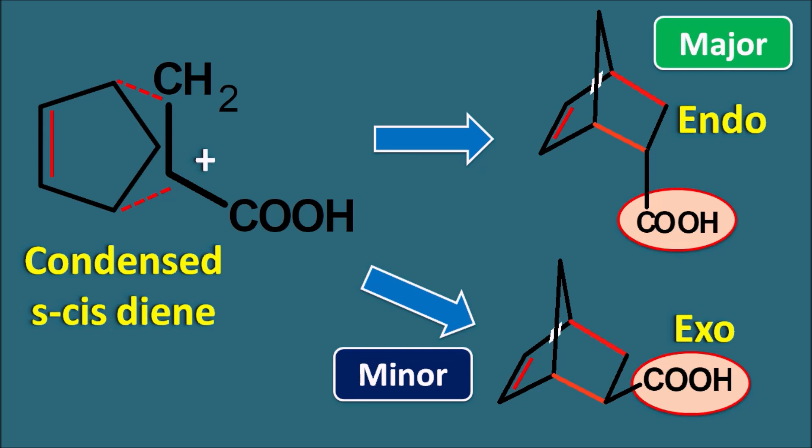So that's about the endo and exo configurations, which are important in the Diels-Alder reaction. When condensed dienes undergo the Diels-Alder reaction, they give two products — endo and exo — and the endo product is always favorable because the Diels-Alder reaction is a syn-addition reaction. If you like this video, please subscribe to our channel, share this video with your friends, and post your comments in the comment box. Thank you for watching.